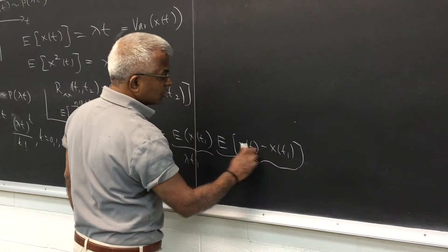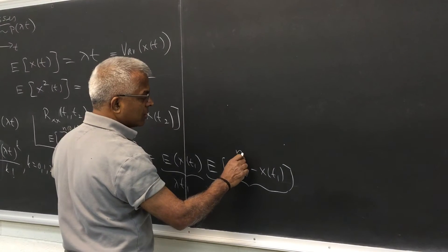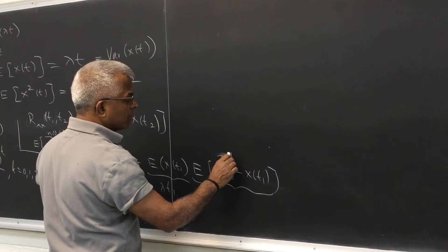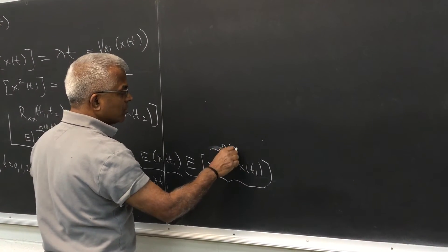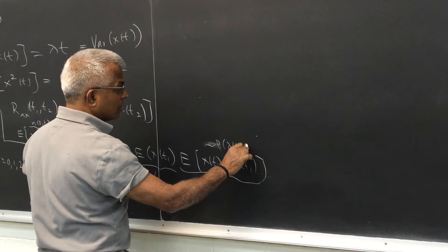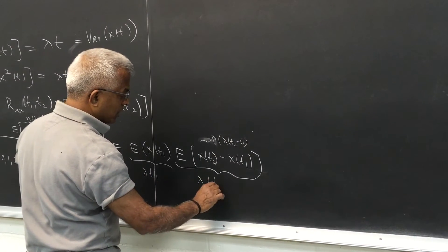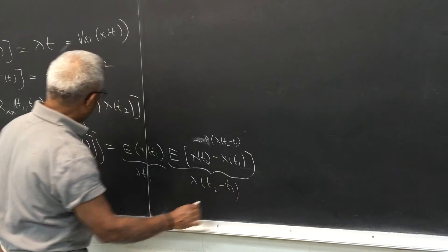And this is similarly a Poisson random variable with parameter lambda t2 minus t1, so this is lambda multiplied by t2 minus t1.